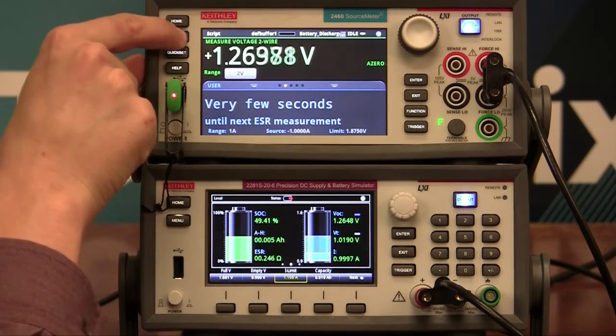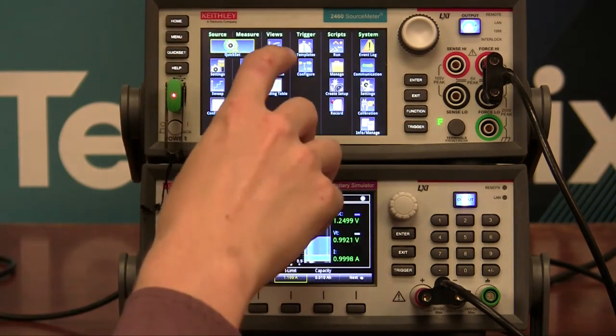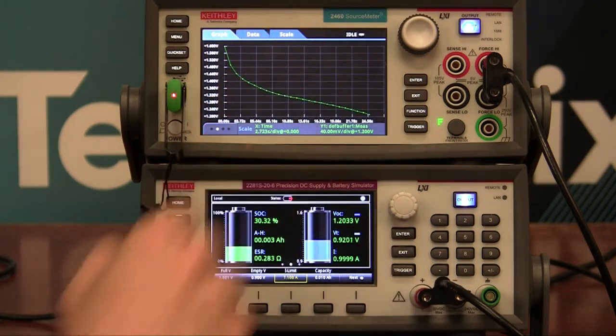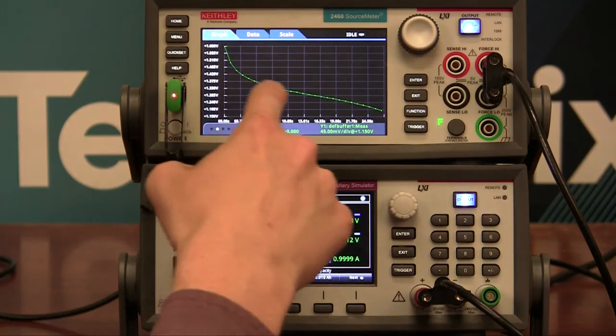So if we want to see this battery discharge profile as it's going, go to menu in the 2450, 60, or 61. Go to the graph. And now you can see it discharging.